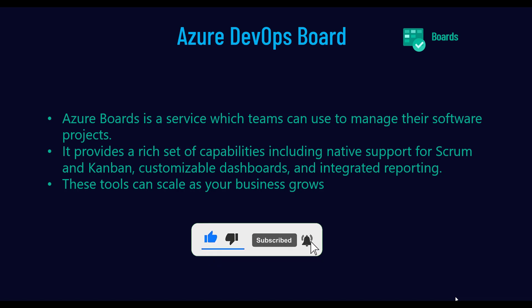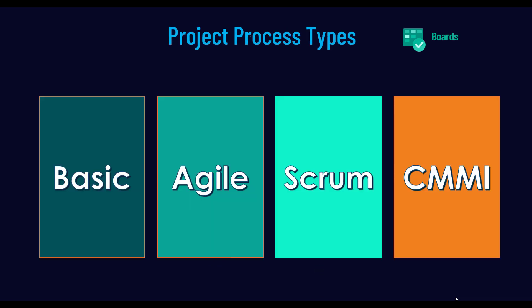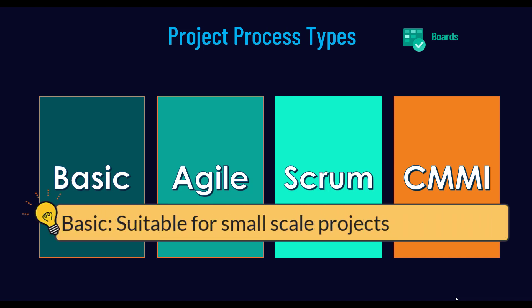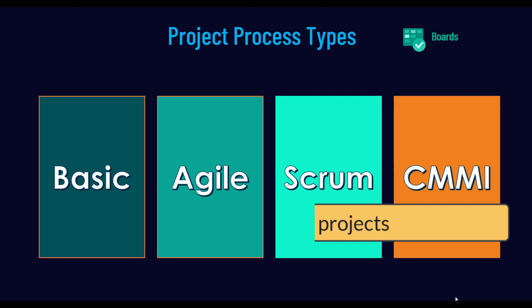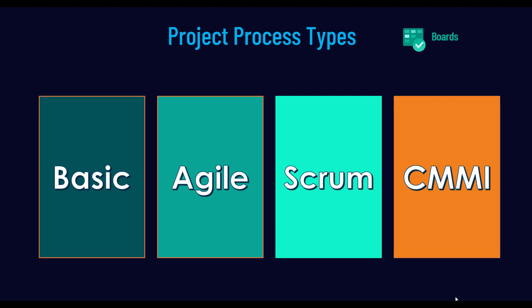Let's see how many process types we have available in Azure DevOps. By default, you have four different processes available. The first one is the basic process, which is suitable for small-scale projects that typically don't want to follow an agile or scrum process — just to accomplish certain features, deal with issues, or handle enhancements within the project.